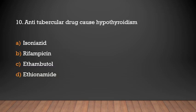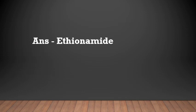Which anti-tubercular drug causes hypothyroidism? Isoniazid, Rifamycin, Ethambutol, or Ethionamide? Answer: Ethionamide. The anti-tubercular drug Ethionamide causes hypothyroidism.